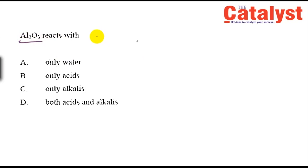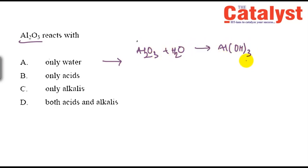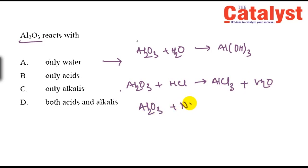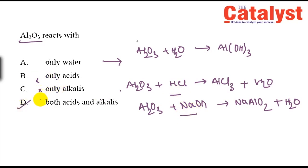The next question is about the reactivity of alumina (Al2O3). We know that alumina is amphoteric — it reacts with both acids and bases. Al2O3 + H2O gives aluminium hydroxide. Alumina reacts with both acids and alkaline solutions. Therefore, the answer is D: alumina is amphoteric in nature.